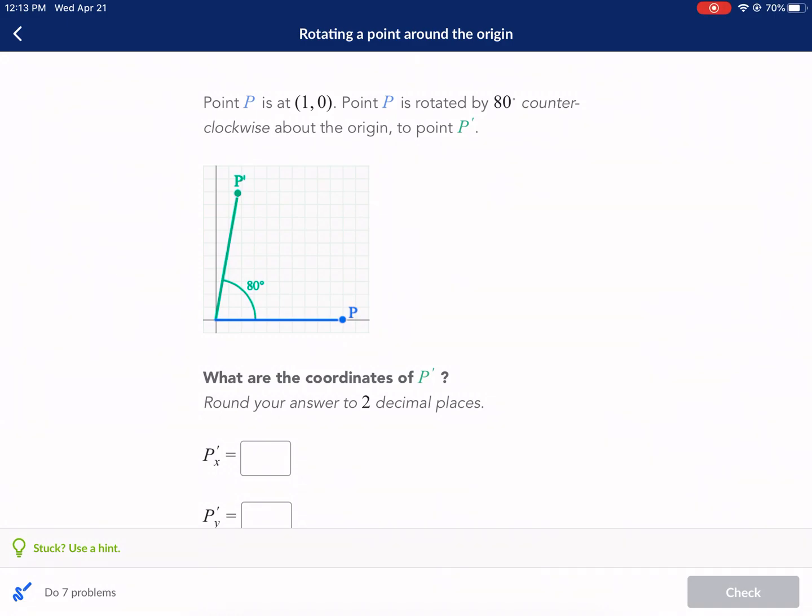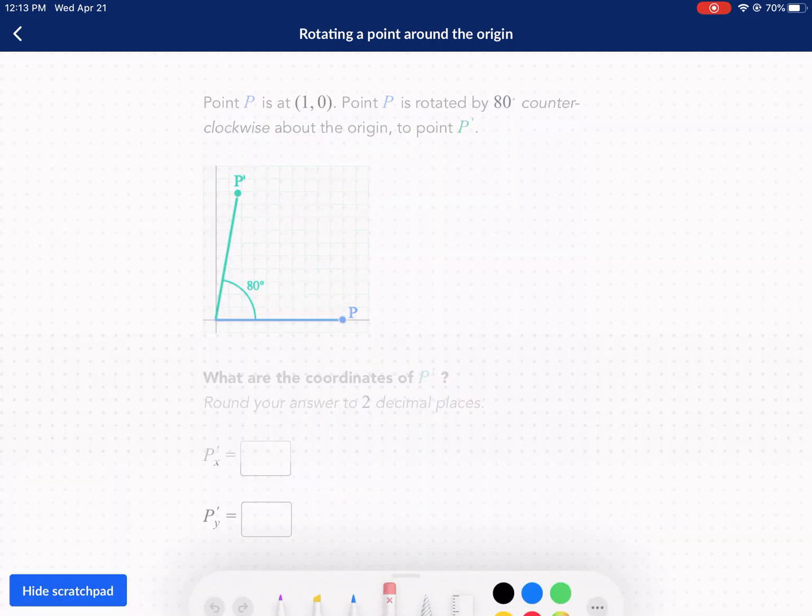Welcome everyone to Wessex Plains Best. We're going to be doing a Khan Academy exercise today, this one called rotating a point around the origin.